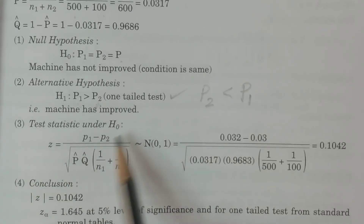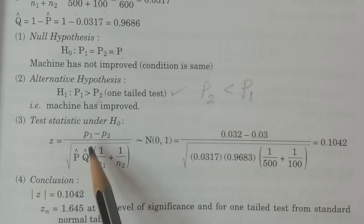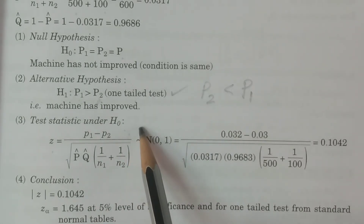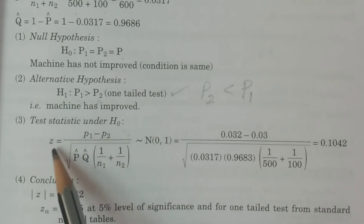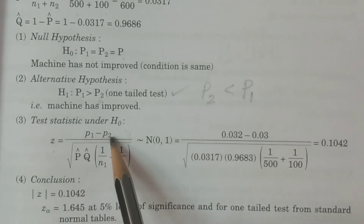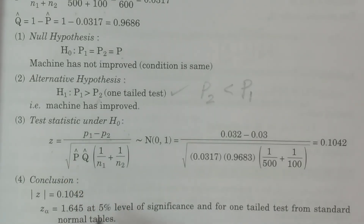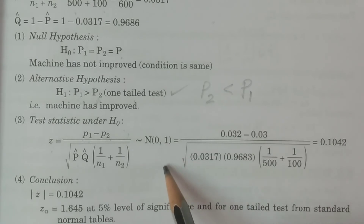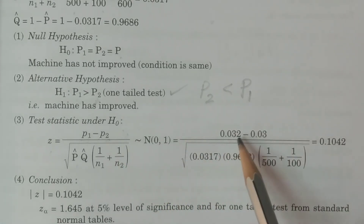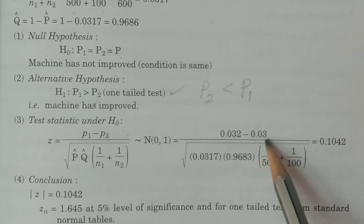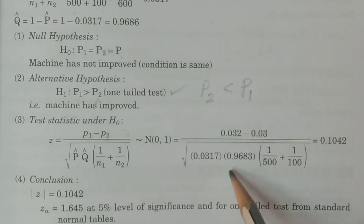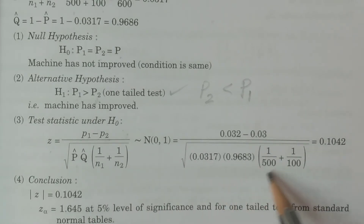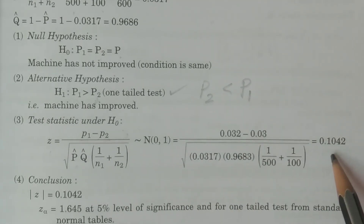Third step — test statistic under H₀. Since capital P is not known, it is estimated by p-bar. The formula is: Z = (p1 − p2) / √[p-bar × q-bar × (1/n1 + 1/n2)], which follows N(0,1). Substituting p1 = 0.032, p2 = 0.03, n1 = 500, n2 = 100, we get Z = 0.1042.